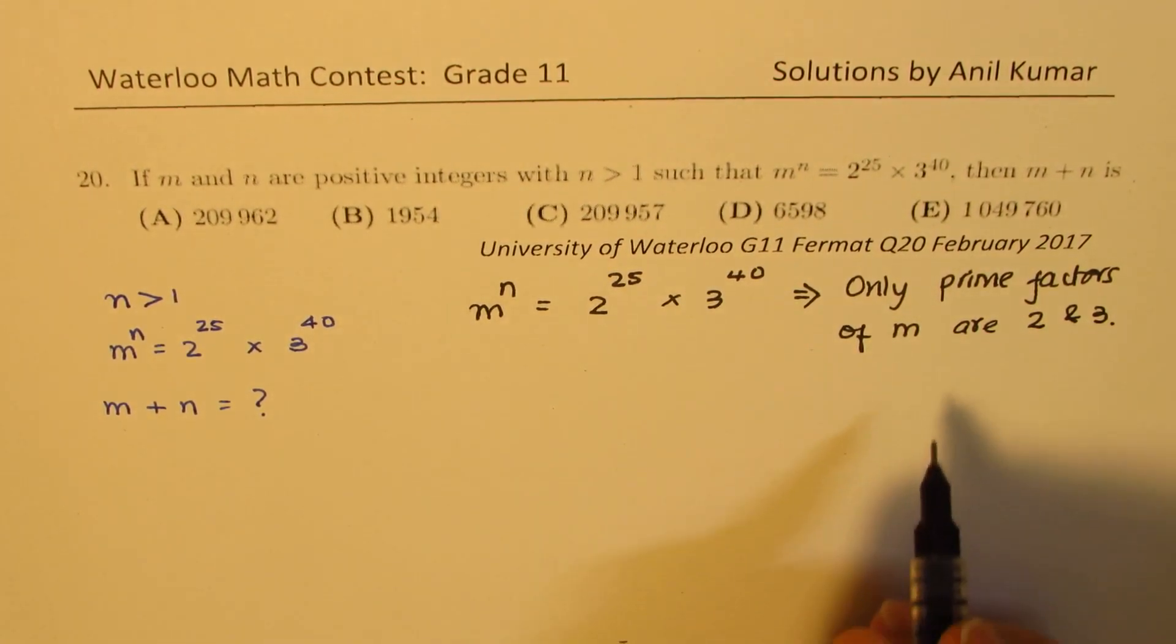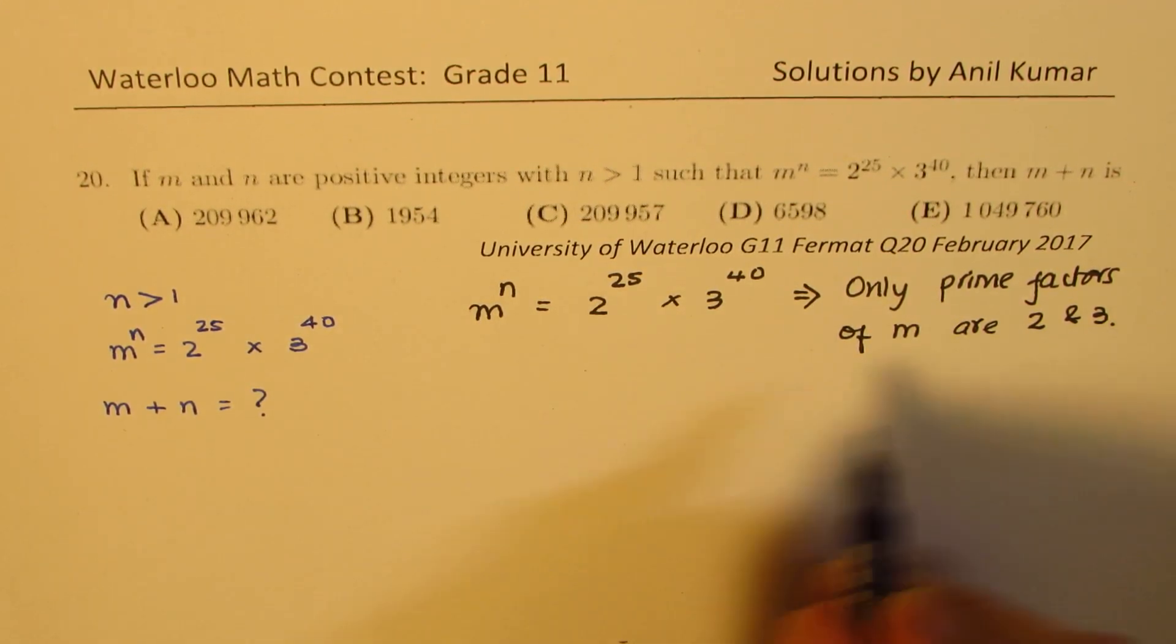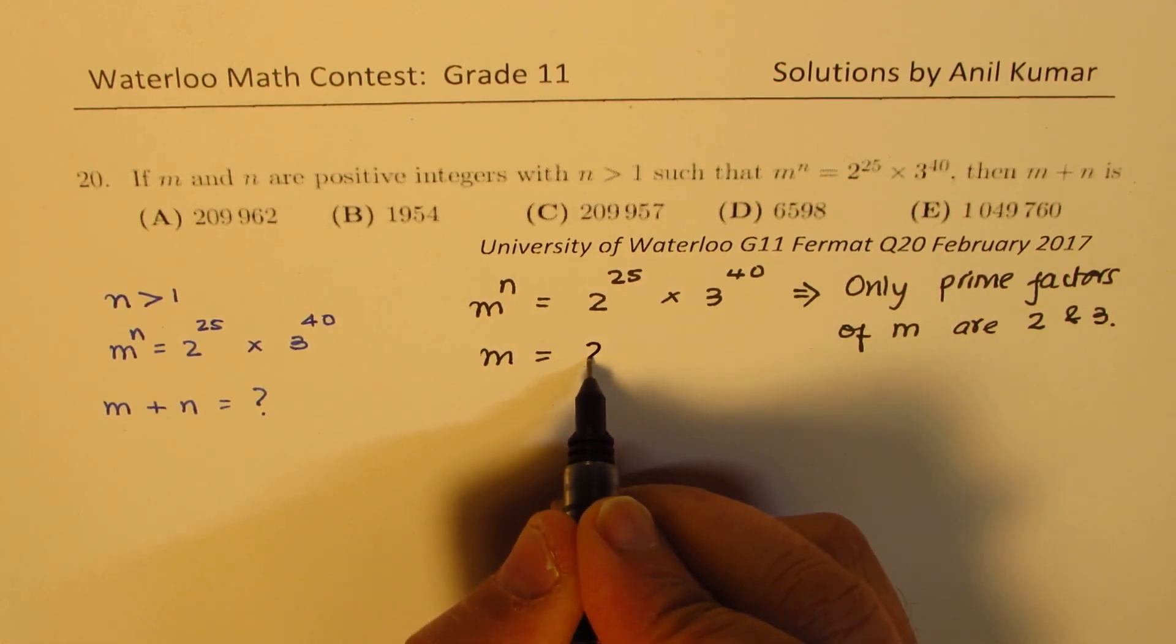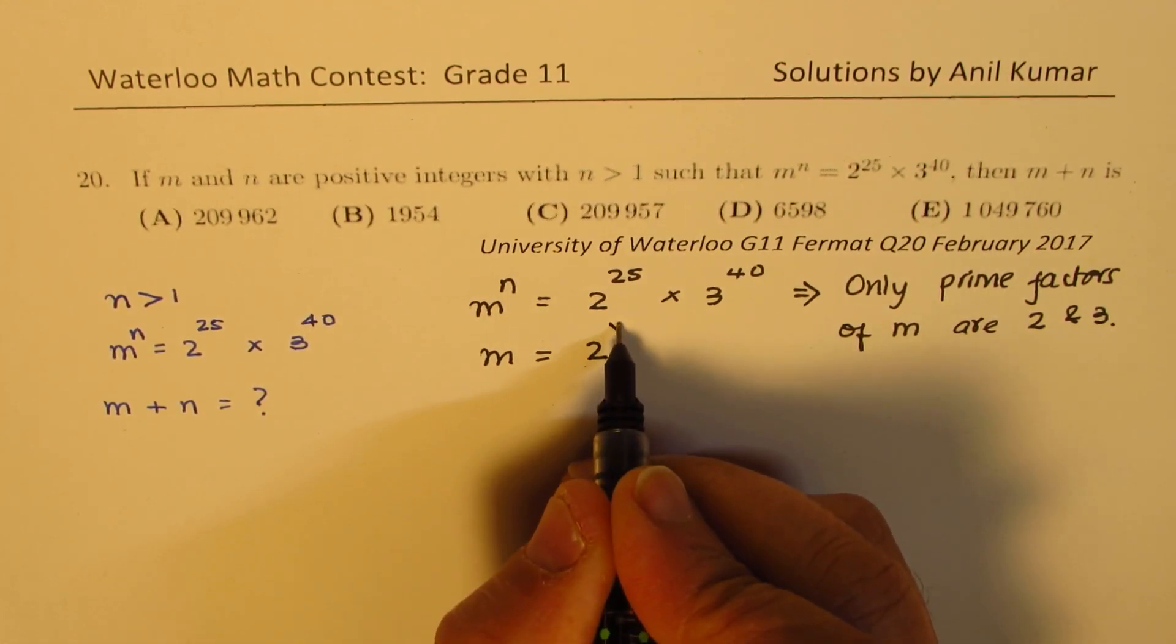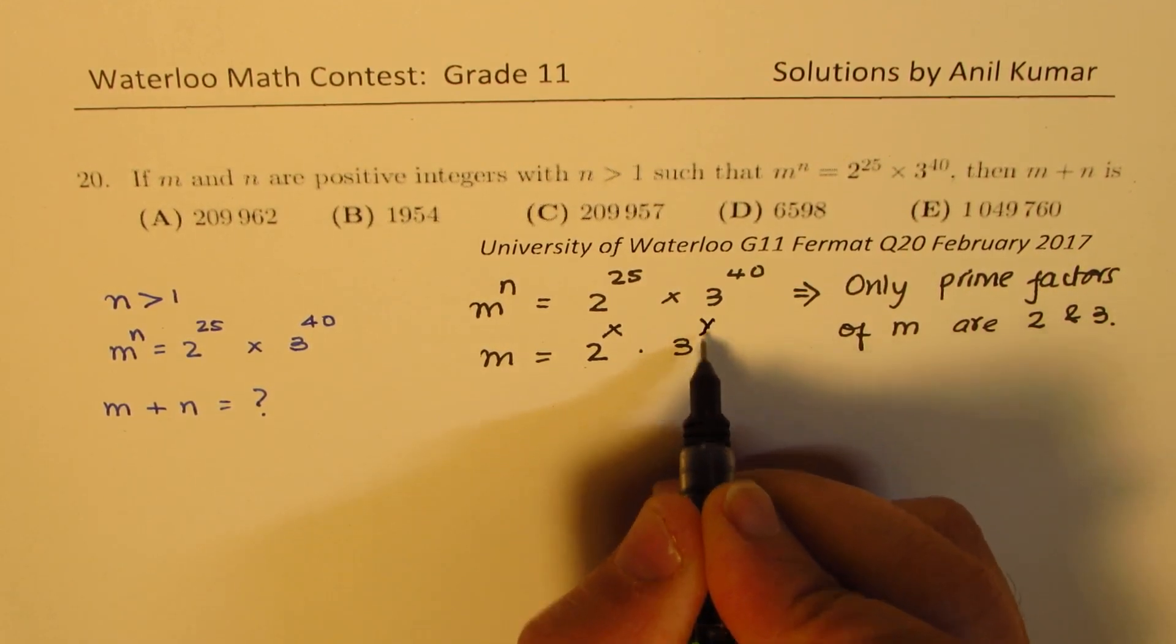So that means I could always write m as a multiple of 2 and 3. So that basically means that I could write m as 2^x times 3^y, since only 2 and 3 are the prime factors of m.